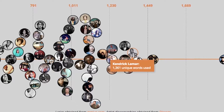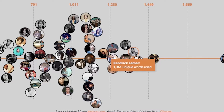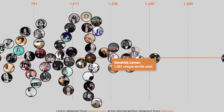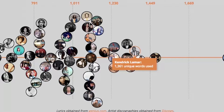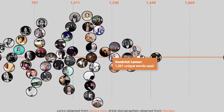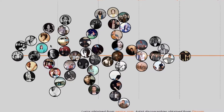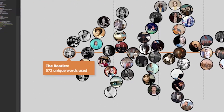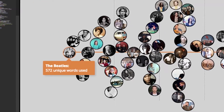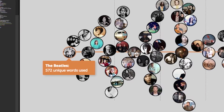So you can see Kendrick Lamar up here with 1,361 unique words within his first 3,500 words — he's pretty far to the right. And the Beatles are all the way on the left with 572 unique words used.